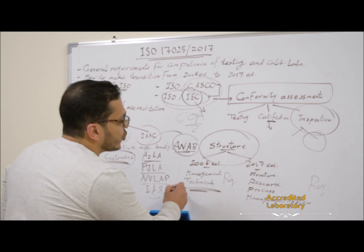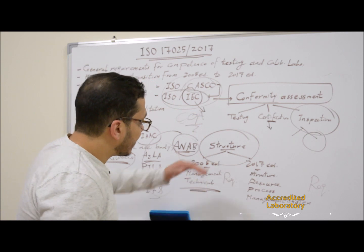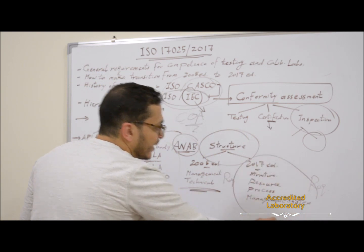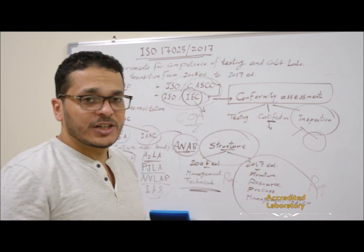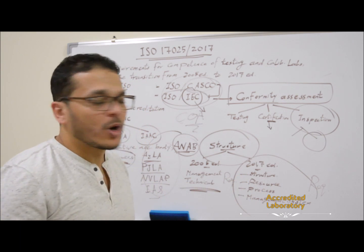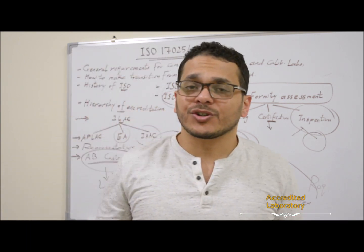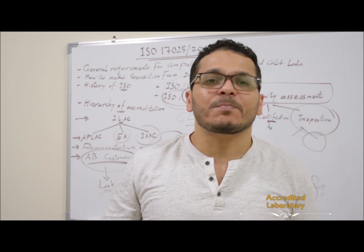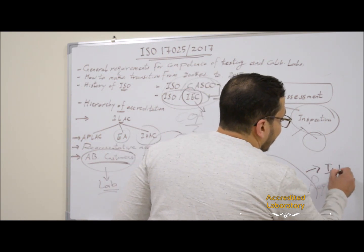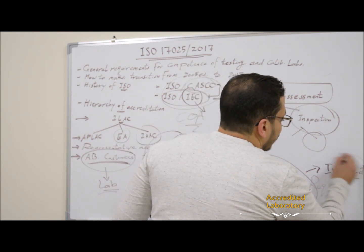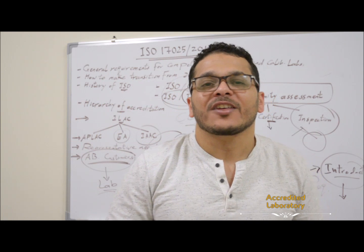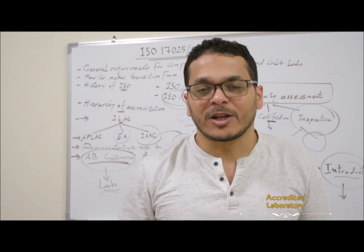In the 2005 edition, there were only management requirements and technical requirements, with many points under each. But now in the 2017 edition, the structure is distributed in more detail: structure requirements, resource requirements, process requirements, and management system requirements. Inshallah, in the next lectures we will discuss every point in detail. The next lecture will be only about the introduction — it's not simple, you will find something very important in it. Thank you, see you in the next lecture. Assalamu alaykum wa rahmatullahi wa barakatuh.